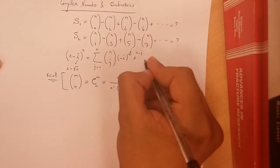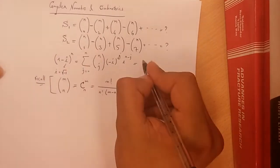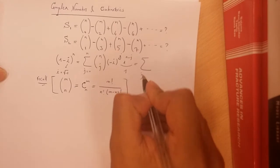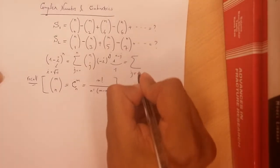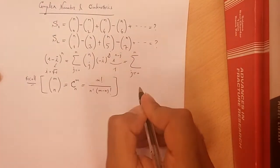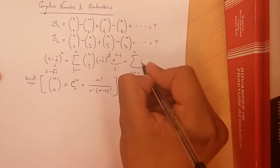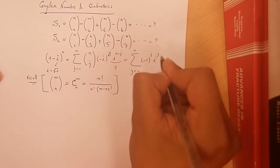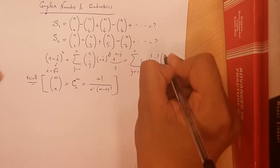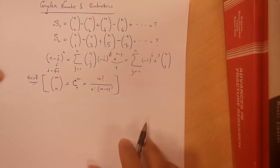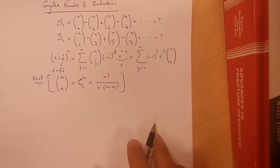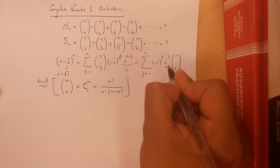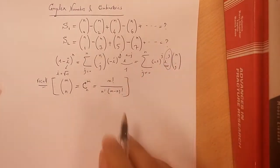This series can be simplified. It is the summation from J equal to 0 to N of (-1)^J times i^J times C(J,N).